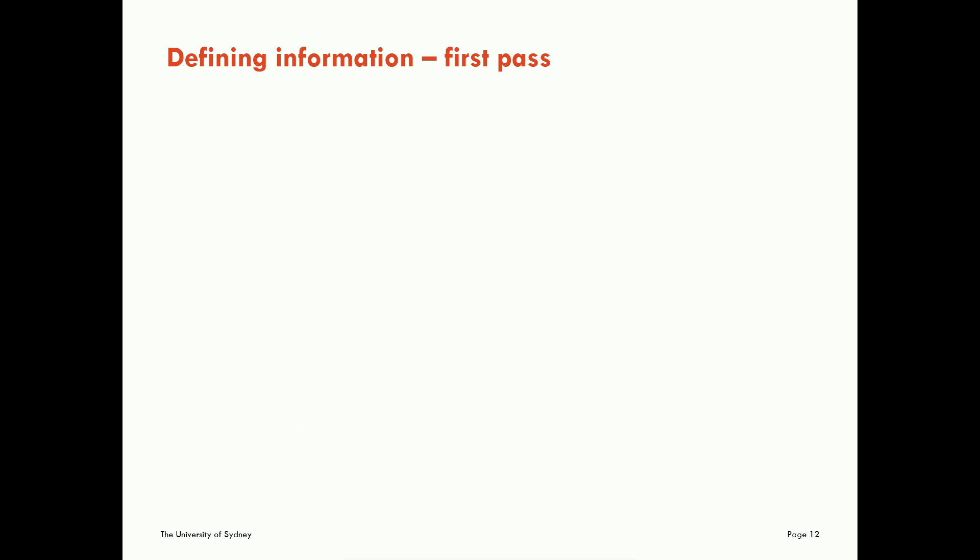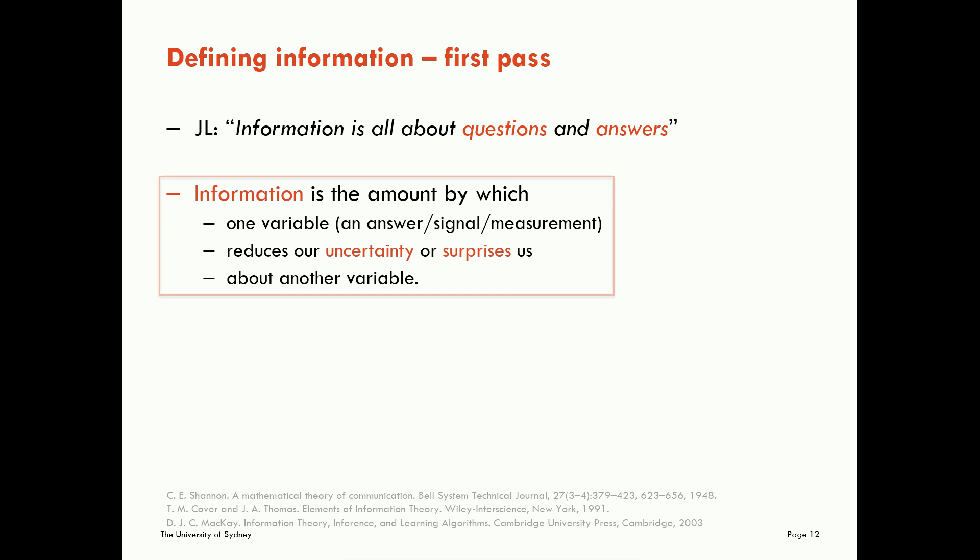So let's start defining information. We'll take our first pass still kind of from a qualitative perspective. I like to say that information theory is all about questions and answers. We can think about information as being the amount by which one variable, which could be an answer itself, it could be a signal, it could be a measurement, it's about how much that variable reduces our uncertainty or surprises us about another variable.